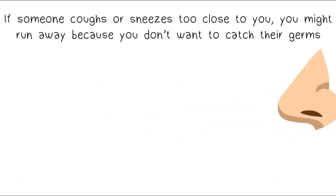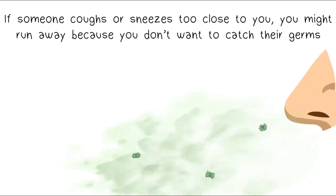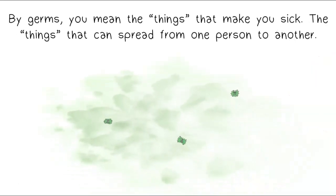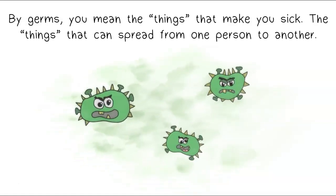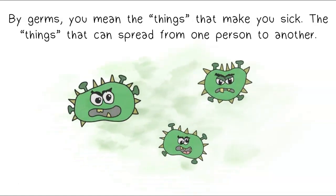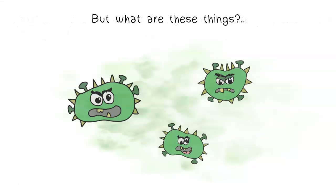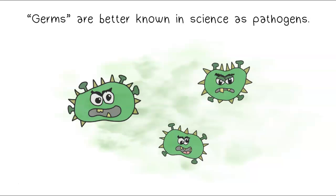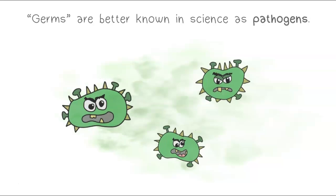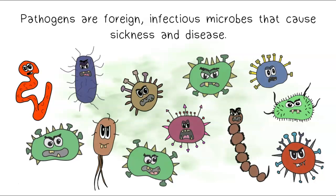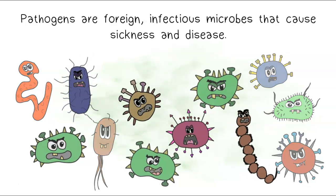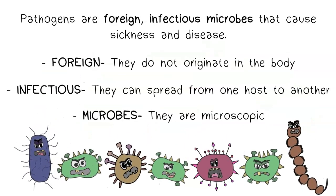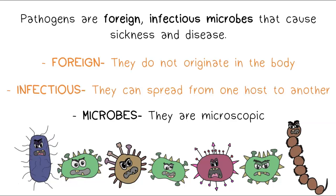If someone coughs or sneezes too close to you, you might run away because you don't want to catch their germs — the things that make you sick and can spread from one person to another. Germs are better known in science as pathogens. Pathogens are foreign infectious microbes that cause sickness and disease. They're foreign because they don't originate in the body, infectious because they can spread from one host to another, and microbes because they're microscopic.